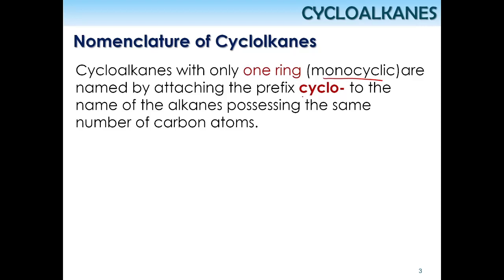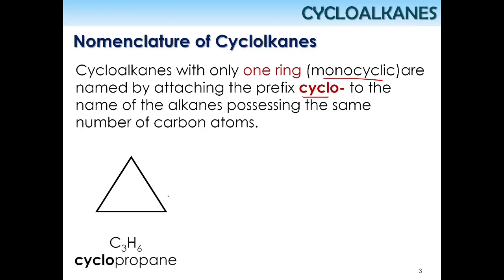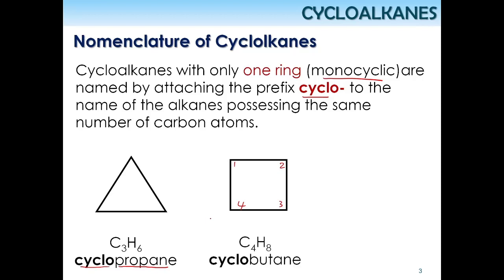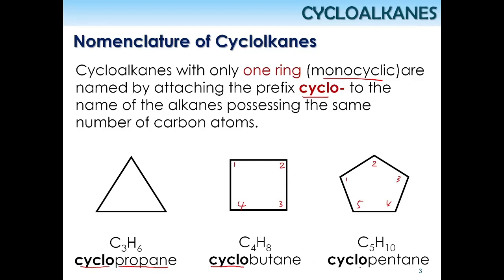Monocyclic cycloalkanes are named by attaching the prefix 'cyclo'. For three carbons, the base name is propane, so you add cyclo to get cyclopropane. Four carbons gives cyclobutane. Five carbons gives cyclopentane. Always add the prefix cyclo for monocyclic alkanes.